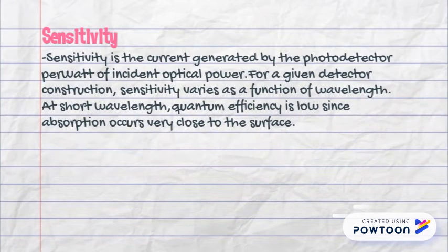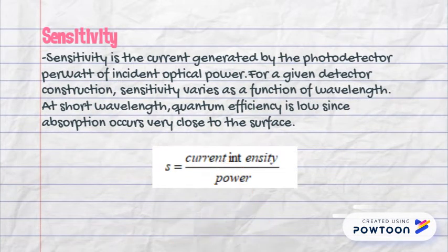Sensitivity: sensitivity is the current generated by the photodetector per watt of incident optical power. For a given detector construction, sensitivity varies as a function of wavelength. At short wavelengths, quantum efficiency is low since absorption occurs very close to the surface.